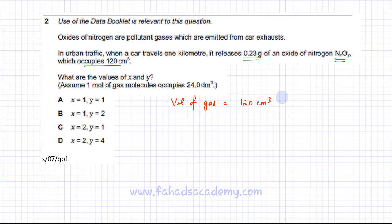Using the volume of gas, we can find the moles of gas. Moles of gas is calculated using the volume of gas, which is 120, divided by the molar volume of gas, which in terms of cm³ would be 24,000 cm³. Using my calculator, 120 divided by 24,000 gives me 5×10⁻³ moles.